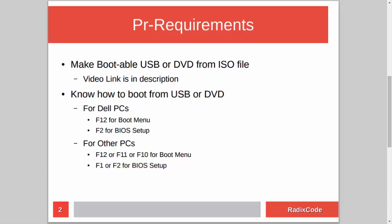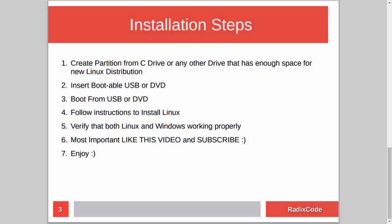The installation steps are very simple. First, we need to create an empty partition for our Linux distribution from the C drive or any other drive that has enough space. After this, we insert our DVD or USB drive into the computer and restart. We then boot from USB or DVD and install our Linux distribution. At the end, we verify that both Linux and Windows are working fine.